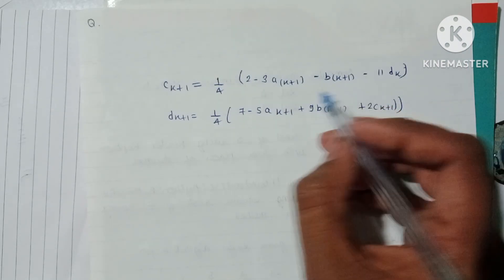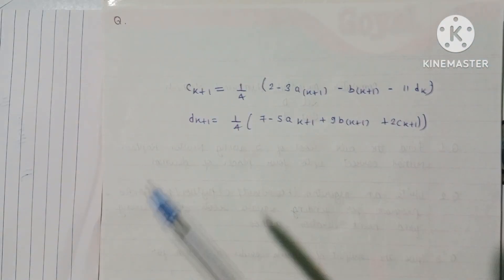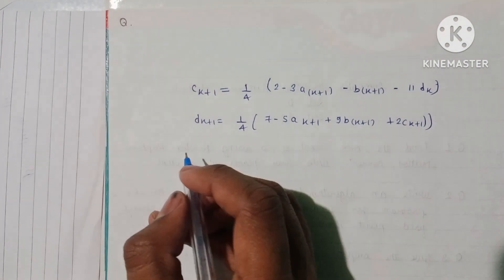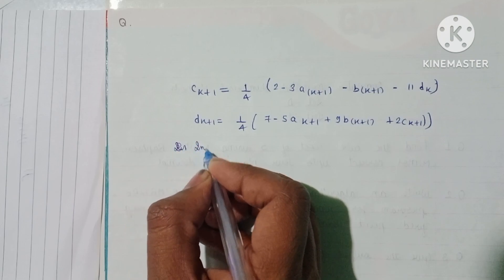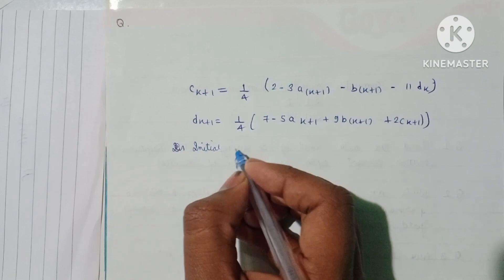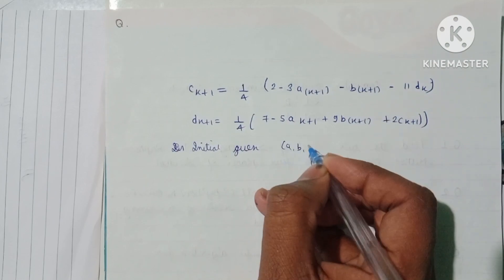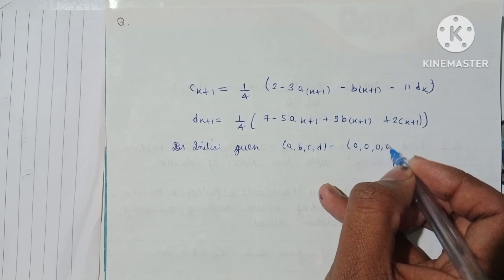So firstly we take an initial guess. For A, B, C, D we take values 0, 0, 0, and 0.